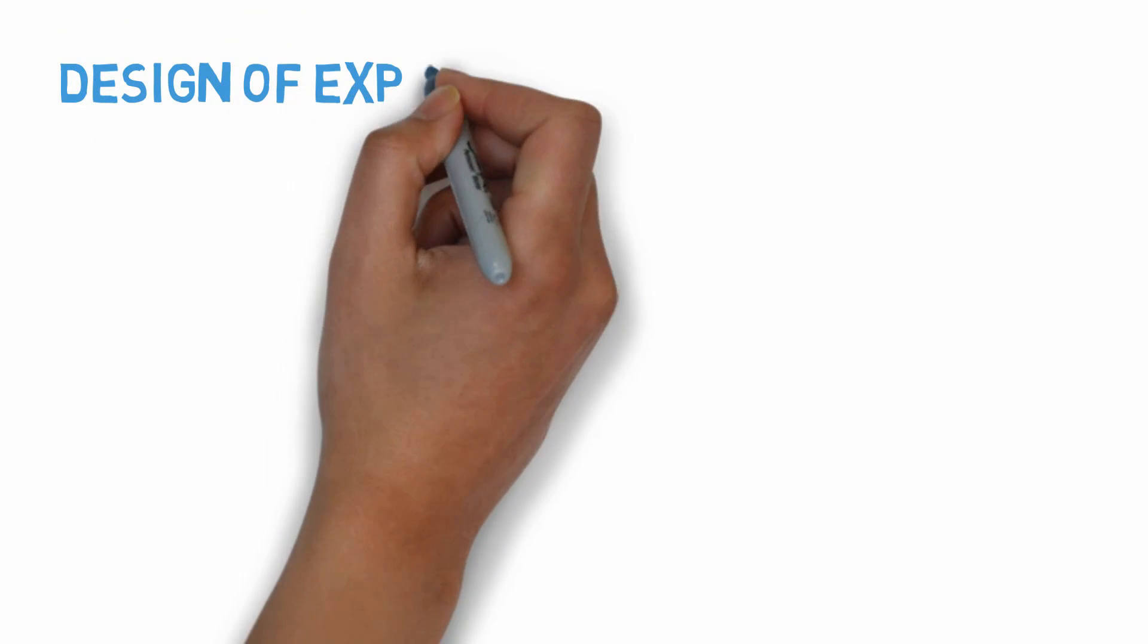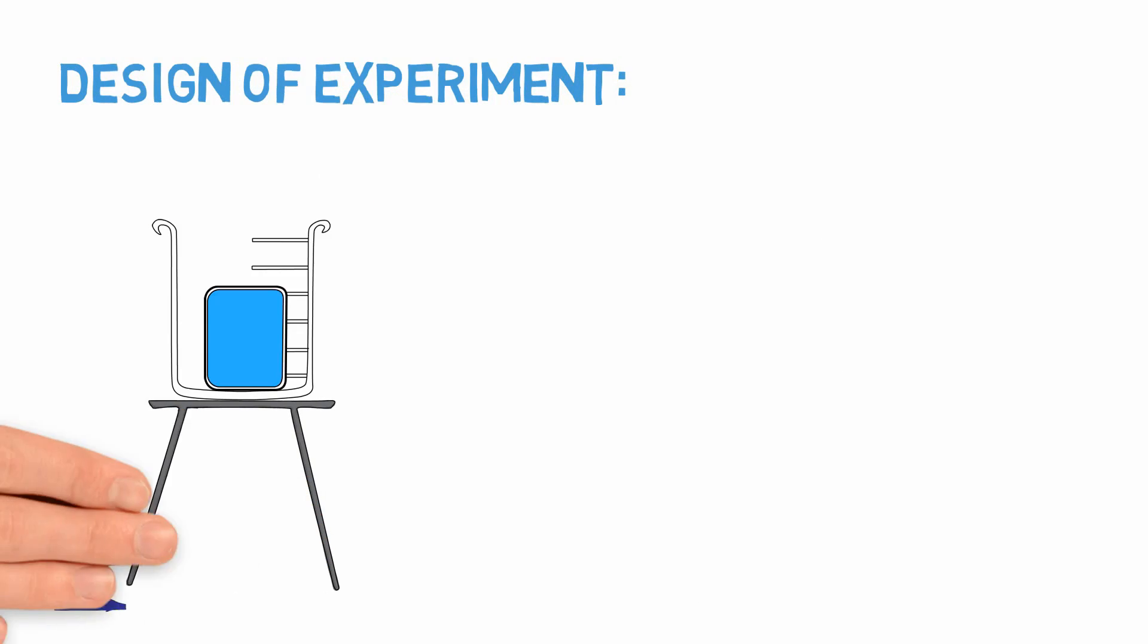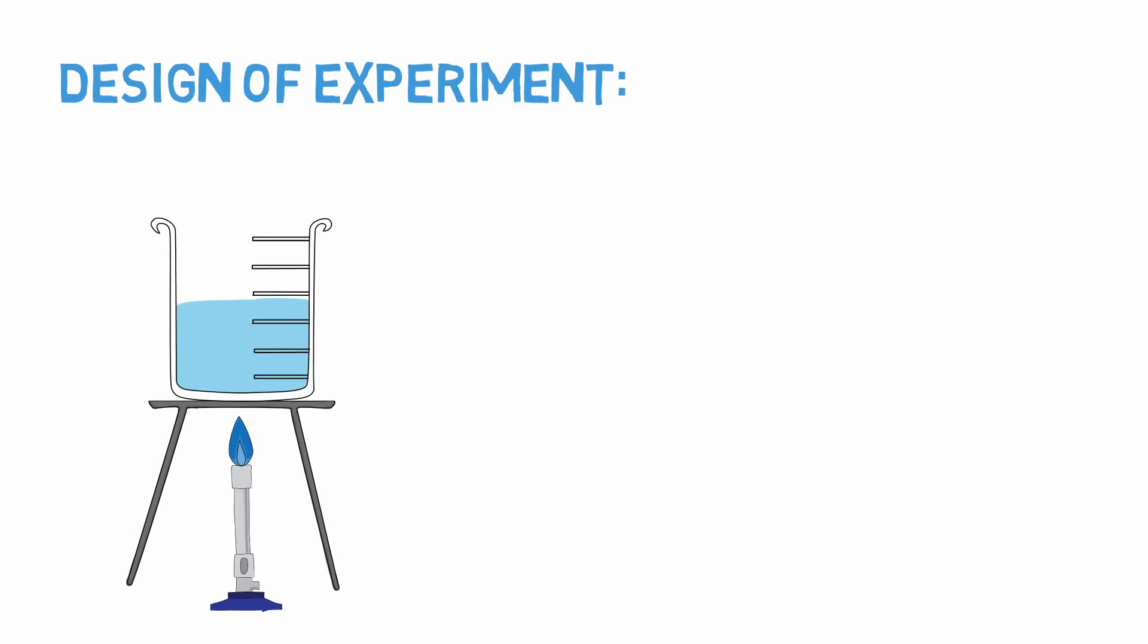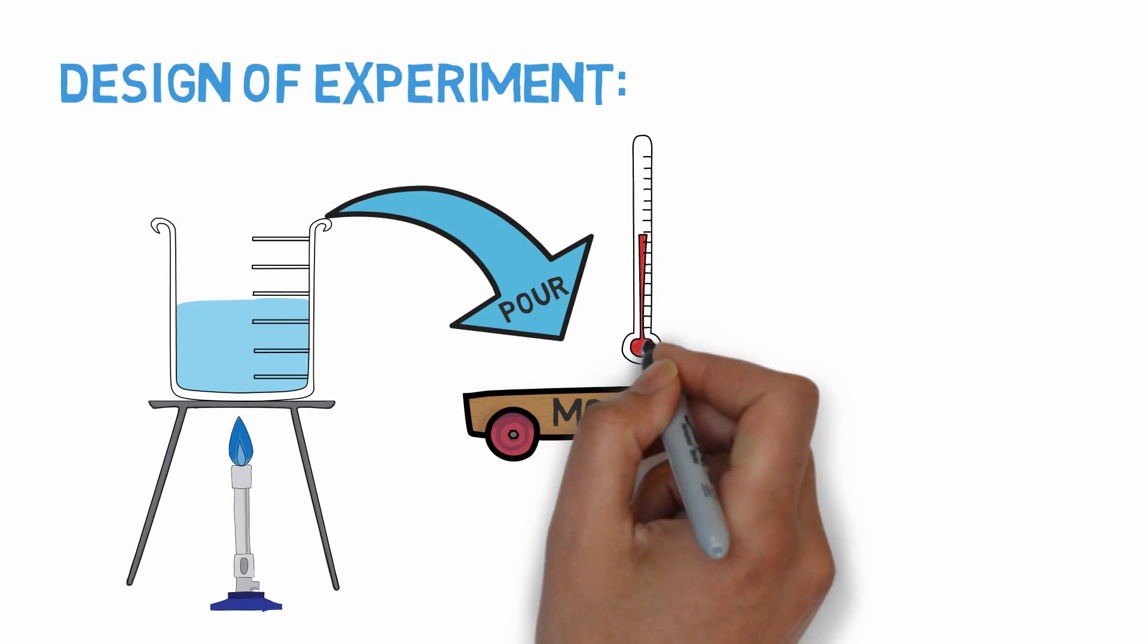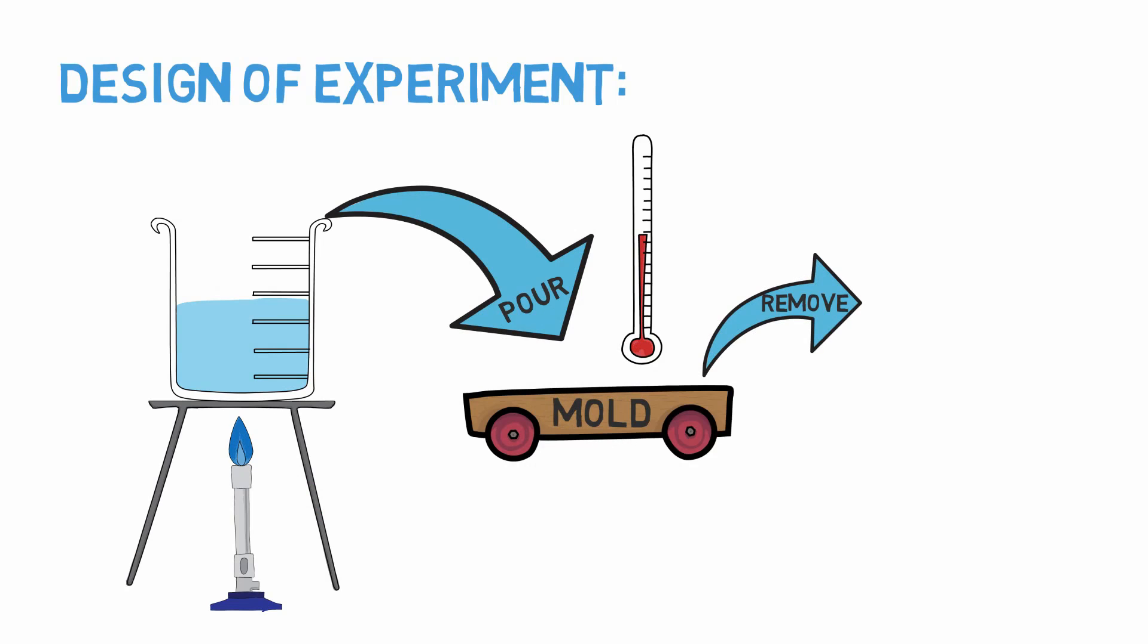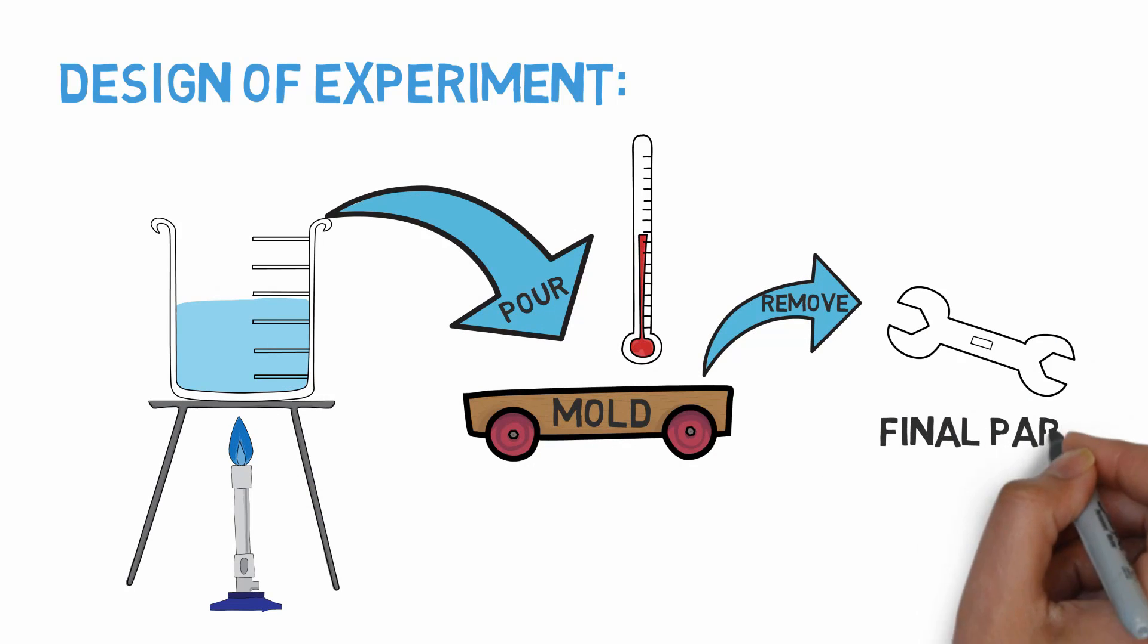Now let's think about designing an experiment for our hypothesis. We could take a solid material and attempt to reshape it by melting it, pouring it into a mold, and allowing it to cool. To evaluate the first half of our hypothesis, we can look at the final shape of the solidified part and see how effective the process was.